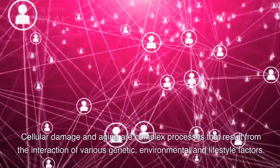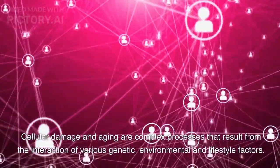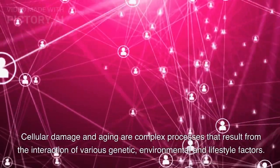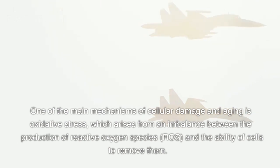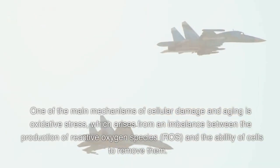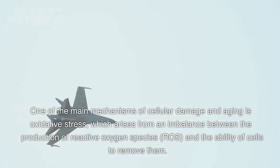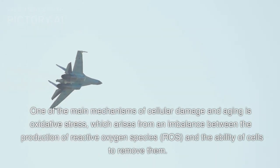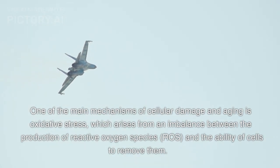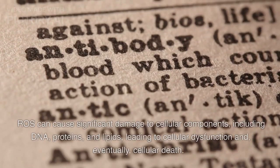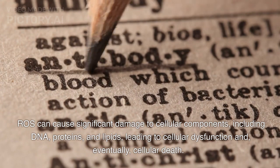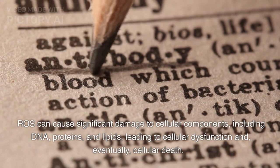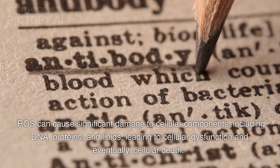Cellular damage and aging are complex processes that result from the interaction of various genetic, environmental, and lifestyle factors. One of the main mechanisms of cellular damage in aging is oxidative stress, which arises from an imbalance between the production of reactive oxygen species (ROS) and the ability of cells to remove them. ROS can cause significant damage to cellular components, including DNA, proteins, and lipids, leading to cellular dysfunction and, eventually, cellular death.